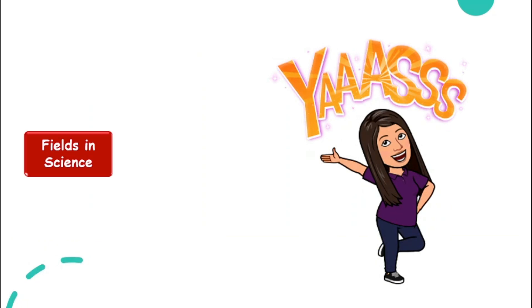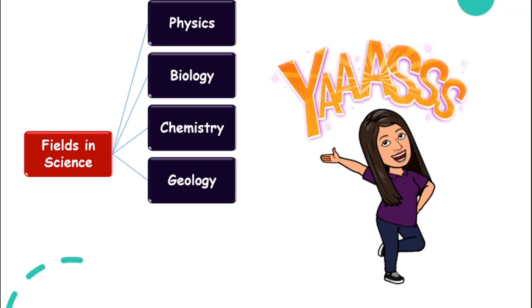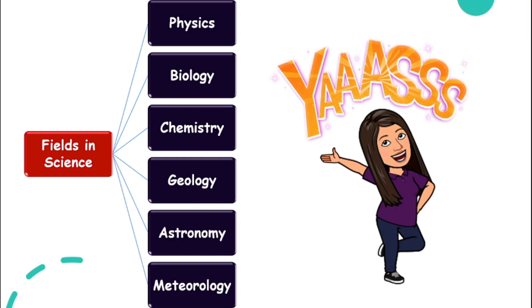There are a few fields in science. We are going to take a look at all of them. We have physics, biology, chemistry, geology, astronomy, and also meteorology. What is the difference between all these fields?